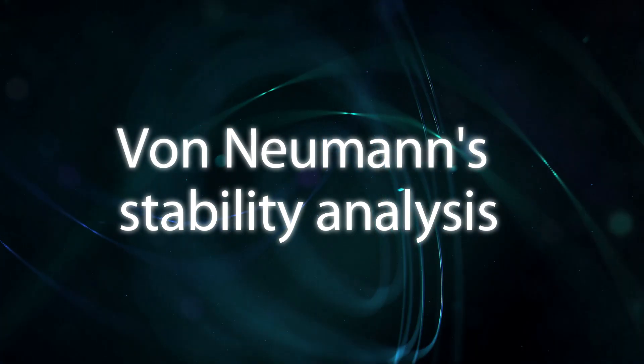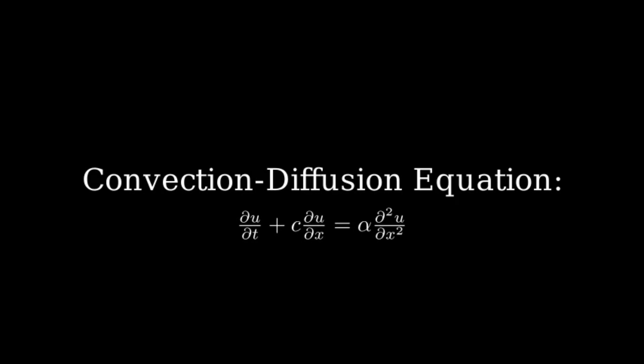Now we shall cross-check the assumption used in this analysis that the error follows the dynamics of the equation. For this, we have chosen the linear convection equation, diffusion equation, and convection-diffusion equation with periodic boundary condition using two initial conditions.